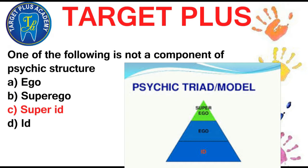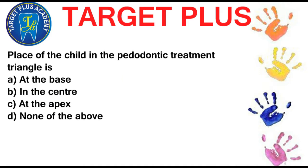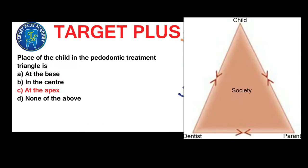Place of child in the pedodontic triangle: the child is at the apex. The dentist-patient and parent-dentist relationship has been explained by the pedodontic triangle by Dr. Wright in 1975. Treating adults involves a one-to-one dentist-patient relationship. Treatment of children relies on a one-to-two relationship: dentist, child patient, and family. The child is at the apex of the triangle and is the focus of attention of both the family and the dental team.